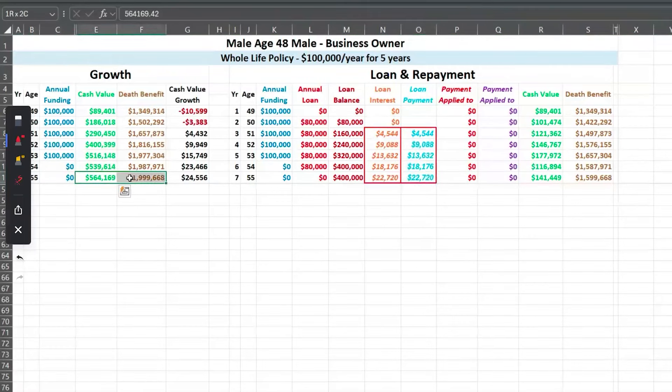At year seven, if you didn't touch it, your cash value would be $564,000, your death benefit would be $2 million, and you would have received from the insurance company $24,556.